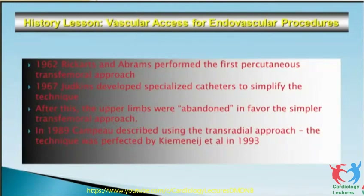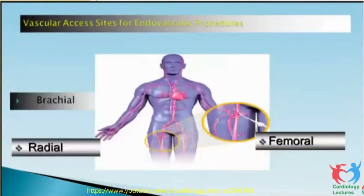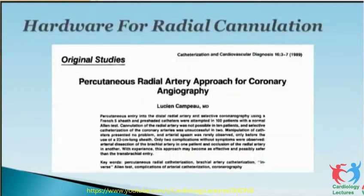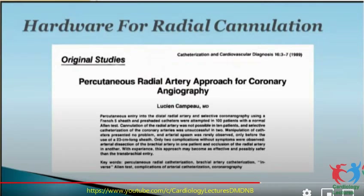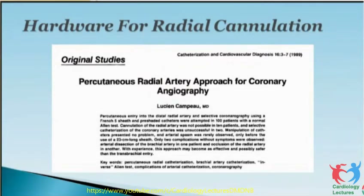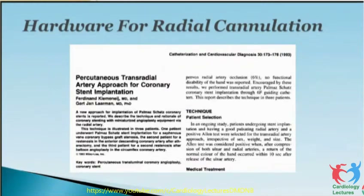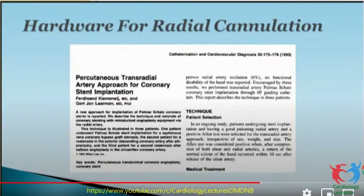The technique was perfected by Kiemeneij in 1993 by performing PTCA. These are the vascular access sites for endovascular procedures — radial, brachial and femoral, only three access sites. The first original study of coronary angiography from the upper limb was published in 1989 by Campeau, and after that he stopped doing upper limb procedures. Kiemeneij then revived this technique by doing angioplasty through the radial, published in CCVI in 1993.